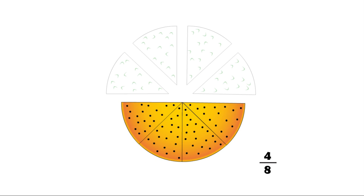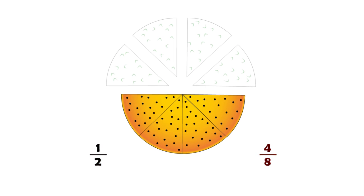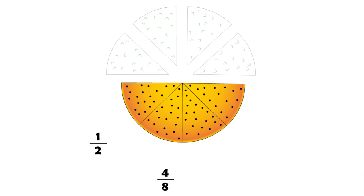As we mentioned earlier, one half of the pizza has olives, which means that one half is equal to four-eighths. So the two fractions are equivalent because they both refer to the same area of the pizza or the same part of a whole.